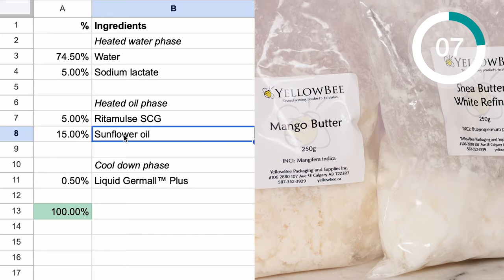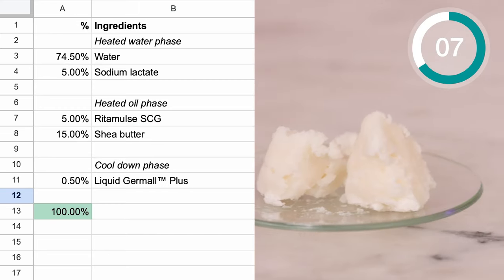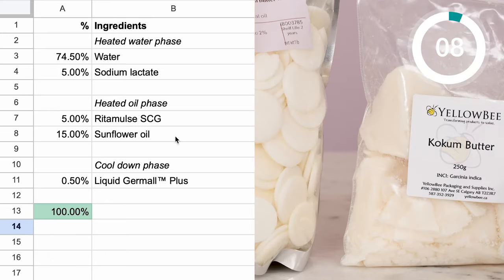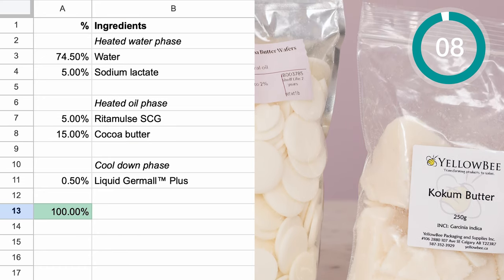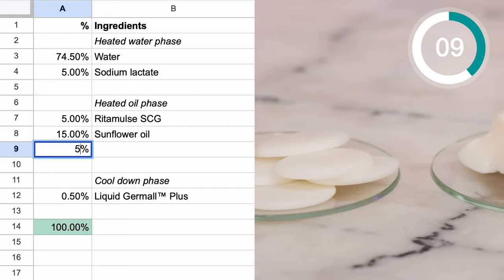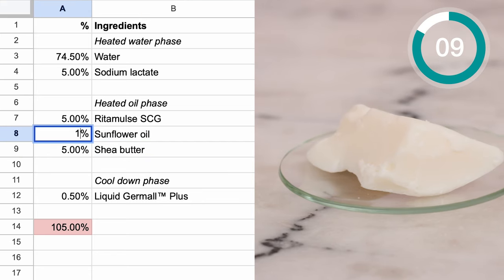If you'd like an ever so slightly thicker, richer emulsion, try using a soft butter like shea butter or mango butter instead of a liquid oil. For even more of a viscosity boost, try a brittle butter like cocoa butter or kokum butter. You can also try a blend of butters and oils. I tend to prefer more oils than butters in my emulsions, but experiment and see what you think.